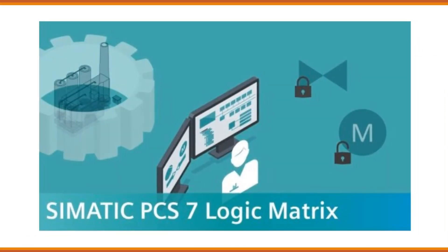Simatic PCS7 Logic Matrix. The logic matrix is not directly a standalone PCS7 product but refers to a cause and effect diagram. A user interface is provided with a cause and effect diagram so that which interlocks result in which operation, or which operation is affected by an interlock, can be seen through the logic matrix of PCS7.